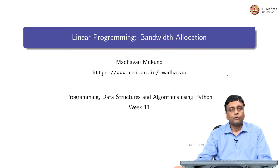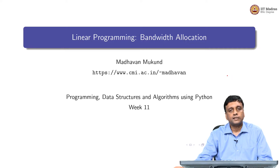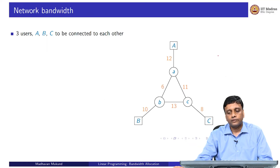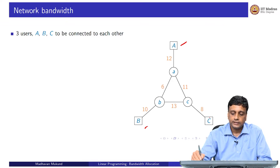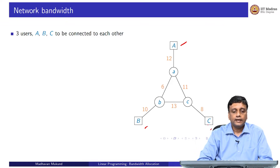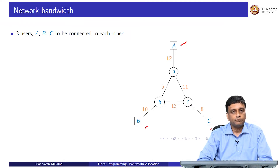Let us look at another linear programming example which will lead us to another kind of problem which we will look at as a general way of solving a large class of algorithmic problems. This is a problem called bandwidth allocation. Suppose we have a network — a telecom network — where an internet provider has a network and there are three users: A, B, and C. You can think of A, B and C as three locations of a company.